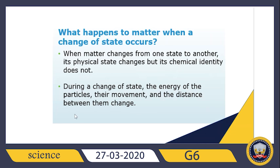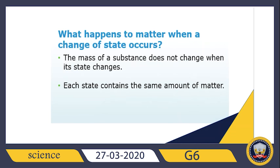The amount of energy absorbed by the particles determines how their movement will differ, and the distance between particles will either decrease or increase according to the amount of energy lost or gained. Number four: the mass of a substance doesn't change when the state changes. For example, the mass of three ice cubes equals the mass of the liquid water that results from their melting.